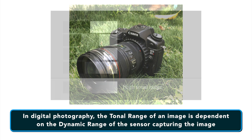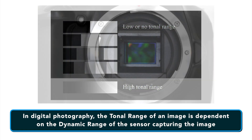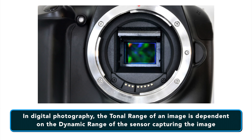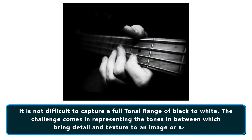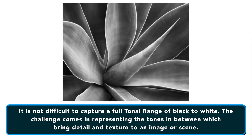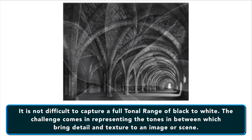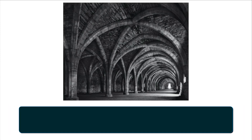In digital photography, the tonal range of an image is dependent on the dynamic range of the sensor capturing that image. It should be noted, however, that it is not difficult to capture a full tonal range of black to white. The challenge comes in representing the tones in between, which bring detail and texture to an image or even a scene that you shoot with your digital camera.